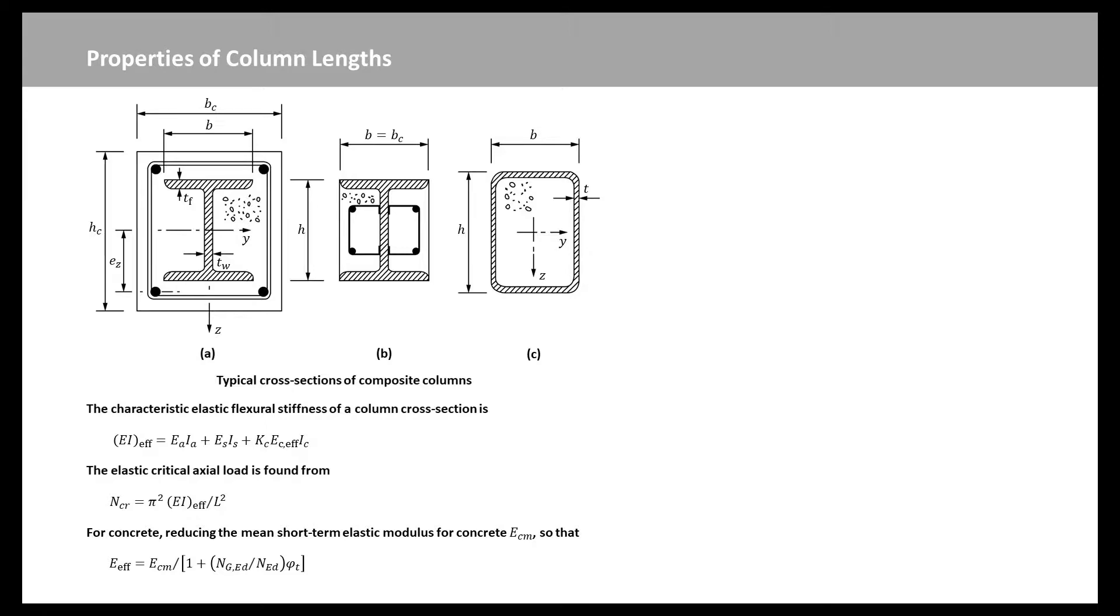Where NED is the design axial force, NGED is the part of NED that is permanent, and phi T is the creep coefficient. The non-dimensional relative slenderness of a column length for buckling about a particular axis is defined by this equation.